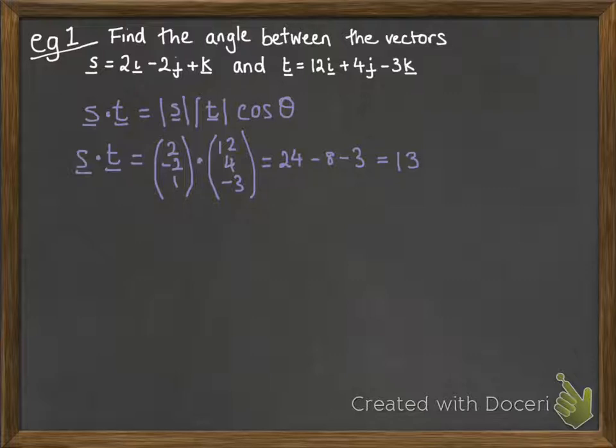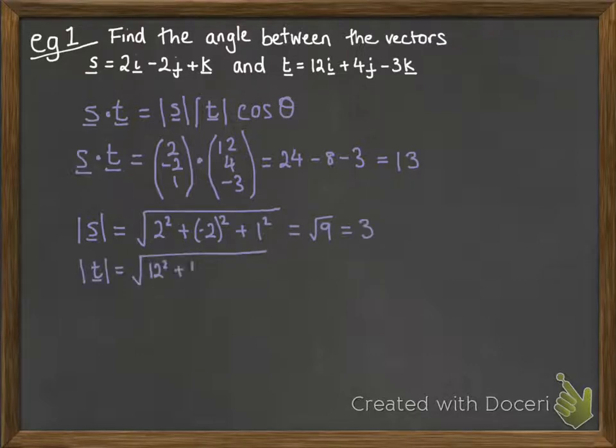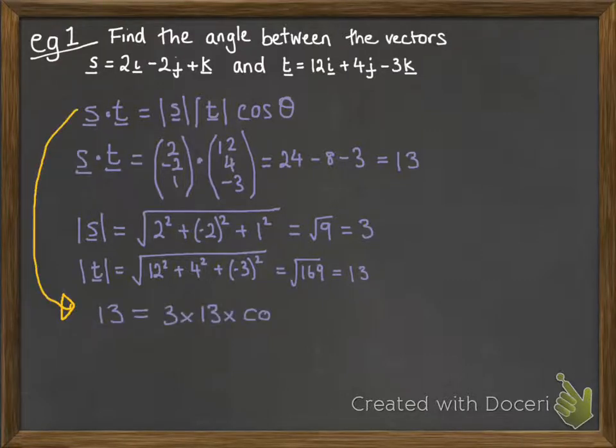We're also going to need the magnitude of S and the magnitude of T. Those are fairly straightforward things that you've seen before. Then we're going to put it all into that formula that's on that first purple line there. So bringing that down and replacing it with the numbers we've just worked out, this is what we get.